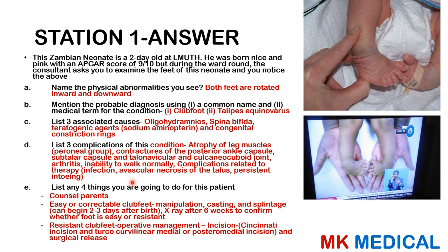The four things that you're going to do: obviously you're going to counsel the parents and gain consent, because this child may need surgical intervention. Remember that with talipes you have two main forms — the easily correctable clubbed feet and the resistant clubbed feet. For the easily correctable ones, you want to perform manipulation without force because you can fracture the bones. You can do casting and splintage, which can be done two to three days after birth. Get an X-ray after six weeks to confirm whether the foot is in anatomical position, or if it's resistant and may need surgical intervention via a Cincinnati incision or a curvilinear medial and posterior medial incision, followed by surgical release.